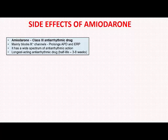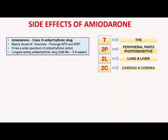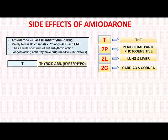Another important property is that amiodarone is the longest acting antiarrhythmic drug with a half-life of around 3 to 8 weeks. Now coming to the various side effects — to remember the side effects we have a mnemonic which says T2P2L2C, that is: the peripheral parts are photosensitive, in 2 L's and 2 C's, that is lung and liver, and cardiac and cornea.